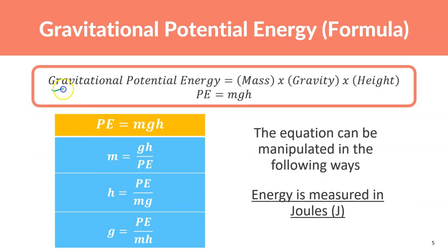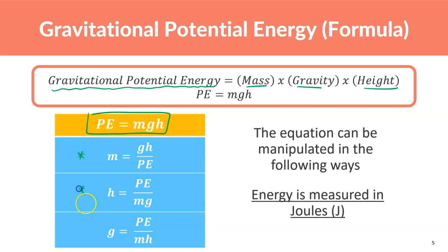The formula for gravitational potential energy is PE = mgh — mass times gravity times height. If a textbook has more mass it does more damage when it hits the ground. On the moon, with less gravity, the same textbook causes less damage; on Jupiter with more gravity, it hits harder. Energy is measured in joules.